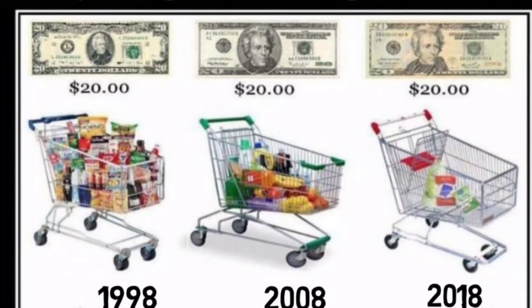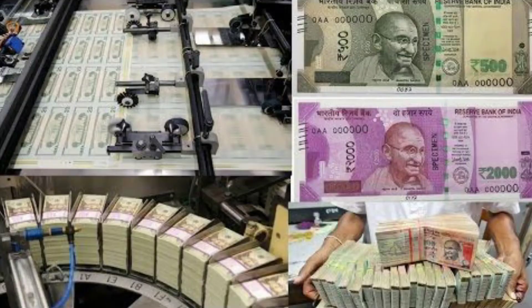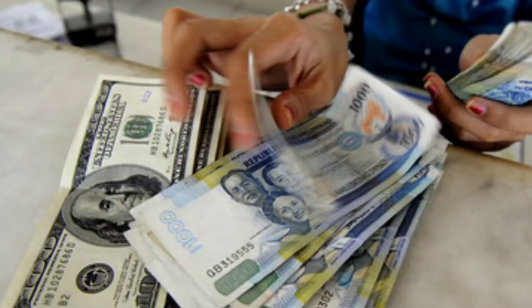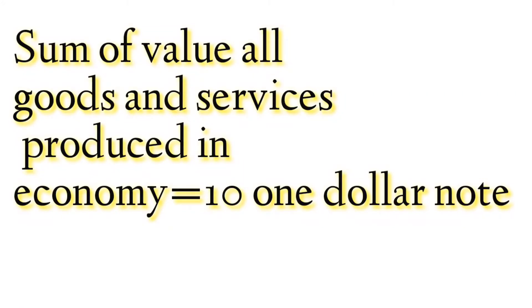So how does the current system work? Consider a hypothetical country with no foreign transactions. Assume there are ten people, each having one dollar. There are various goods produced in the country, but whatever the value of resources and costs, these goods can only be exchanged for the ten one-dollar notes present in the currency system.